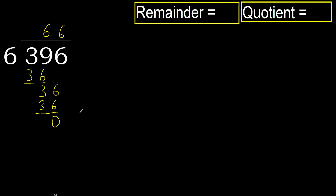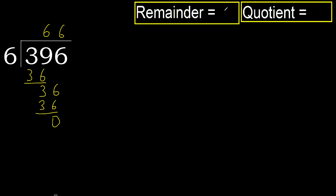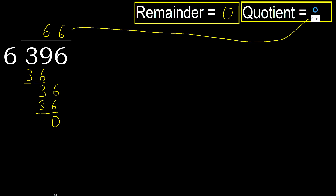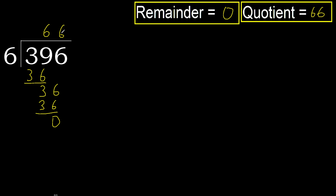That is not a number, therefore finish it. 396 divided by 6 is 66.